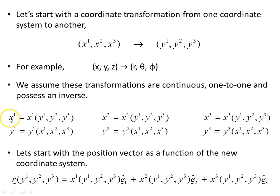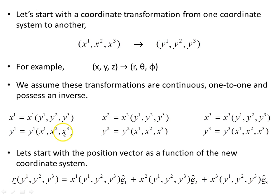Here are the x1, x2, x3 coordinates written in terms of the y1, y2, y3 coordinates and vice versa — y1, y2, y3 coordinates written in terms of the x1, x2, x3 coordinates.